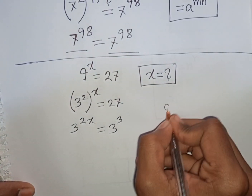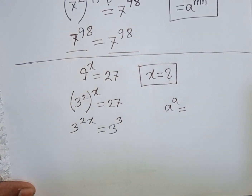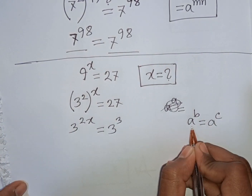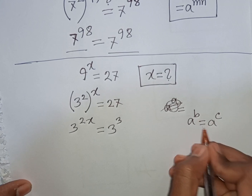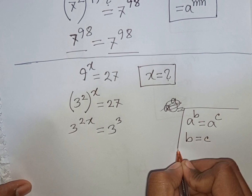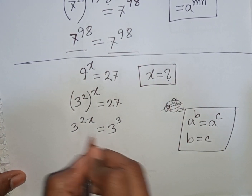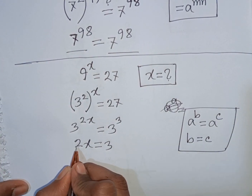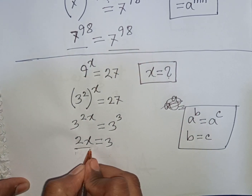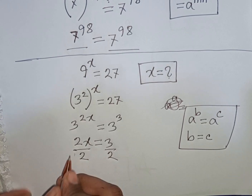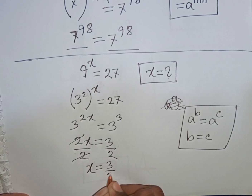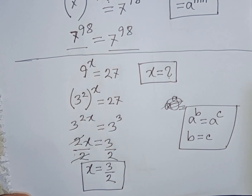Applying the rule that if a^b = a^c then b = c (same base, so the base cancels and the exponents are equal), we get 2x = 3. Dividing both sides by 2, this 2 and this 2 cancel, so x = 3/2. This is our final answer.